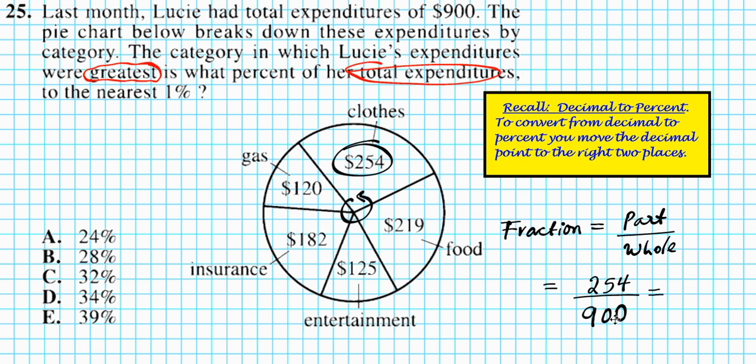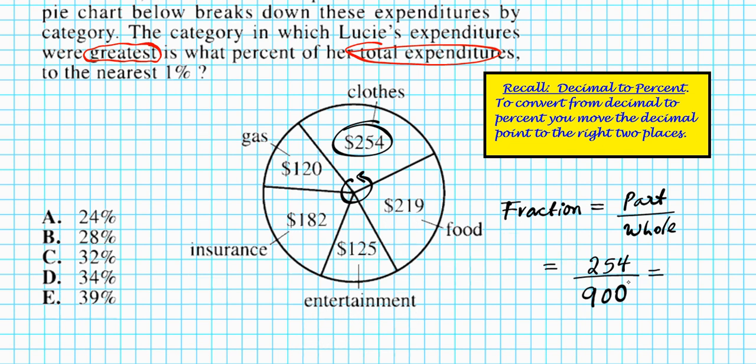So to convert this into percent, there are two ways we can do this. We can multiply by 100 and simplify, or we can convert this to decimal first and then go from decimal to percent. That's the method I'm going to be doing. I'm going to be converting this into decimal first, and then from that into percent.